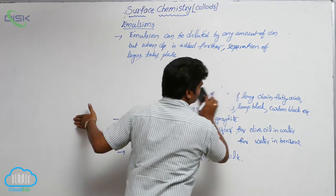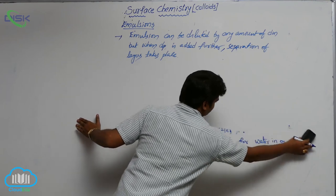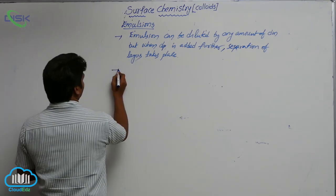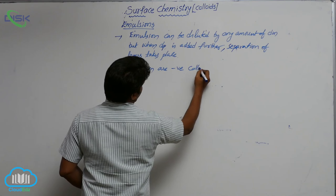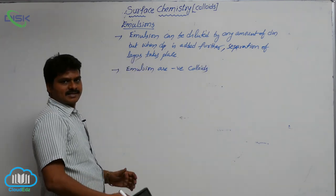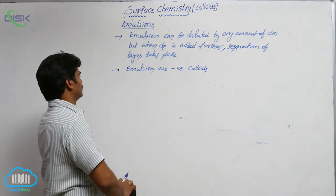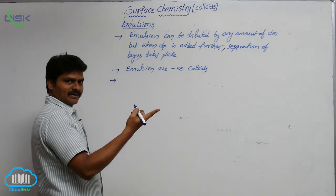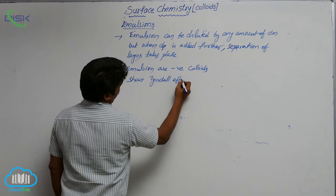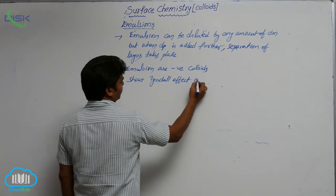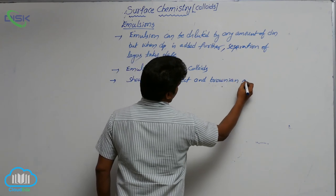Emulsions are also stable due to a sheath of negative charges on the surface of the DP particles, so emulsions are generally negative colloids. Like other colloids, emulsions also show Tyndall effect and Brownian movement.